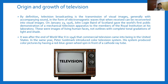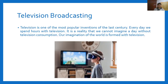For the origin and growth of television: television broadcasting is the transmission of visual images, unlike radio which is all about sound. On January 23, 1926, John Logie Baird of Scotland gave the world's first public demonstration of a mechanical television apparatus to members of the Royal Institution at his laboratory. These were images of living human faces with complete tonal gradations of light and shade. After World War II, in 1946, commercial television came into being in the United States, and on the same year, Peter Goldmark introduced a color television system.